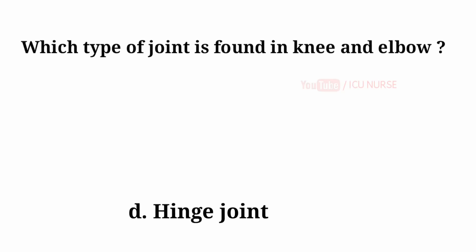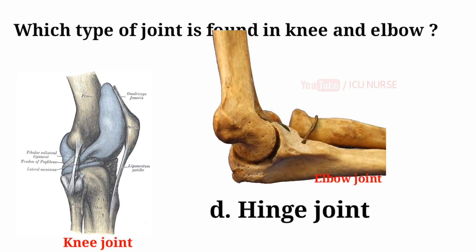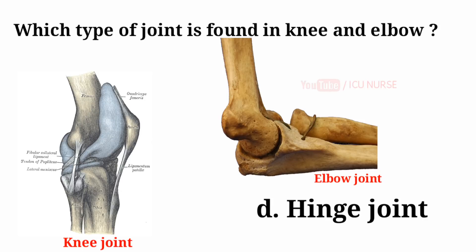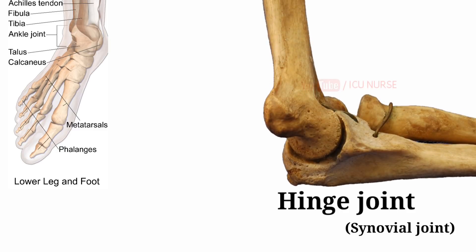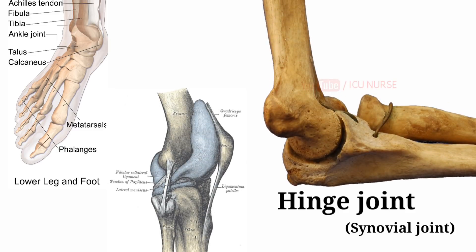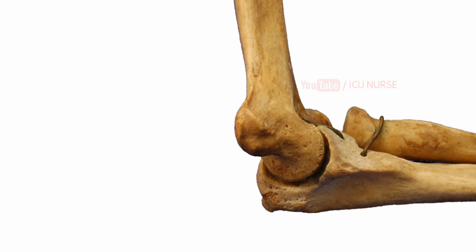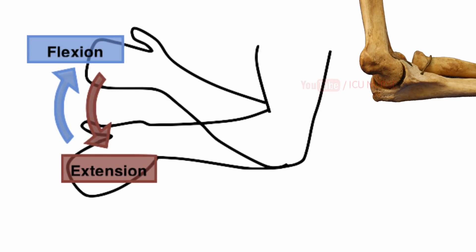The type of joint found in knee and elbow is hinge joint. Hinge joint is a common class of synovial joint. Examples of hinge joints are ankle, elbow, and knee joint. Hinge joints are formed between two or more bones and cannot move towards the other side.